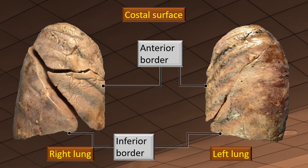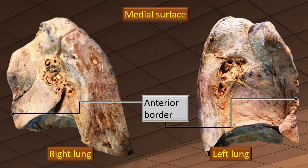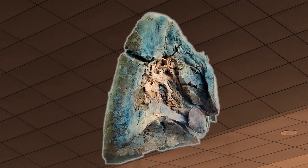On the costal surface, the anterior border is well seen, as is the inferior border. The basic difference between the anterior and posterior border is that the anterior border is comparatively sharper, whereas the posterior border is more rounded. That's how it fits into the contour of the paravertebral gutter in the thoracic cavity. Even on the medial surface, you can still identify the anterior border as quite sharp compared to the posterior border.